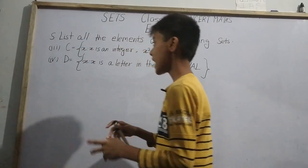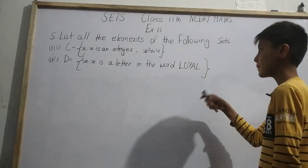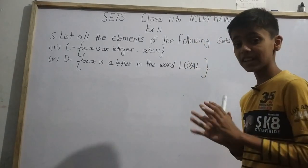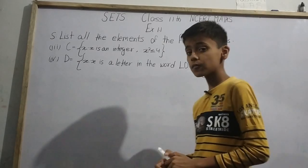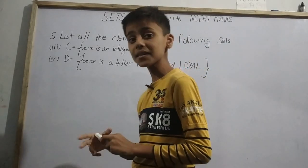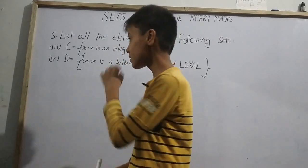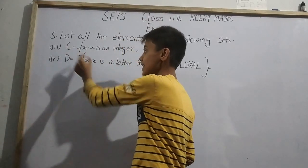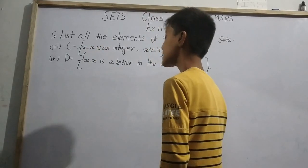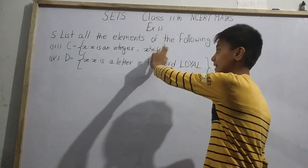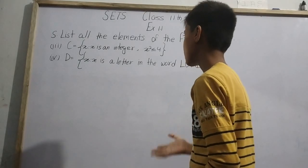As we know, Question 5 is: list all the elements of the following sets. We have already solved two parts. Today we are going to solve the rest of the two parts. So here we have a set named C. It has been given as C = {x : x is an integer and x² ≤ 4}.